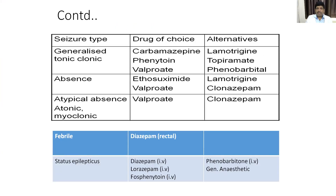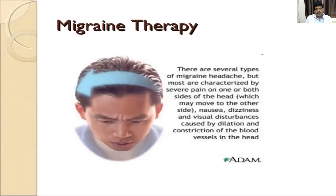This was all about the prescription for grand mal epilepsy. Now coming to the prescription for migraine. Migraine is a very common type of disorder seen in all groups of patients — whether young, child, or old. Usually the person feels a throbbing type of pain in the head, and usually it is in one part — one side of the head.